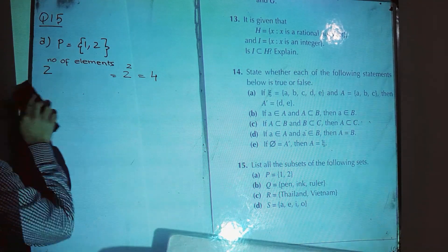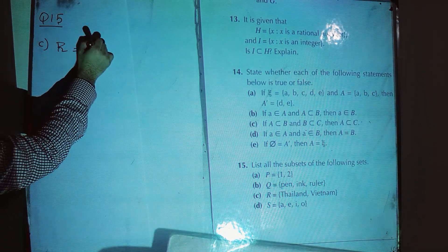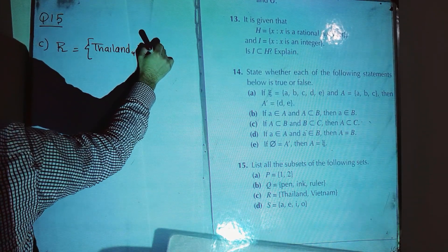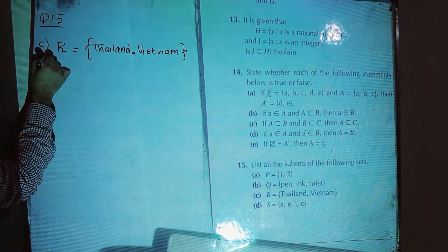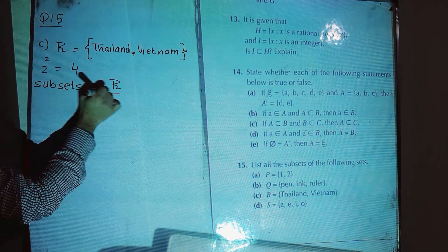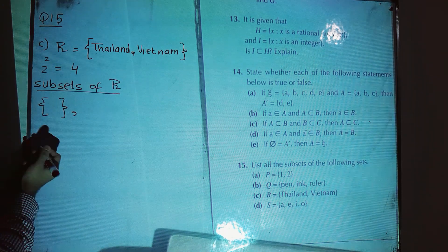The next one is part C — set R with elements {Thailand, Vietnam}. How many subsets can we have for set R? That is two raised to the power of the number of elements. We have two elements, so we will have four subsets. Start from the empty set — the empty set is a subset of all sets.